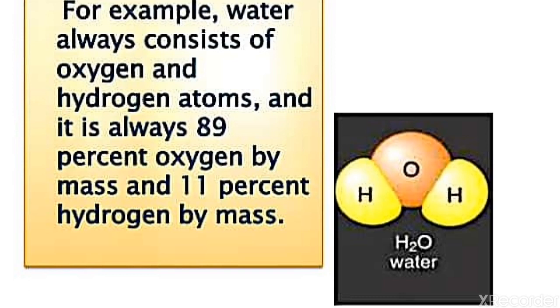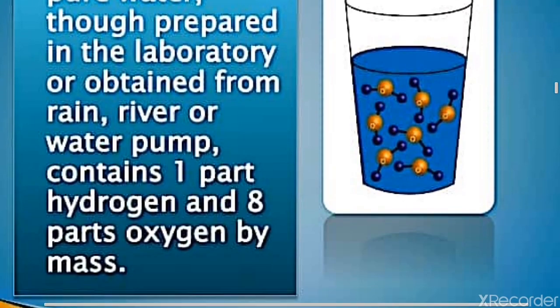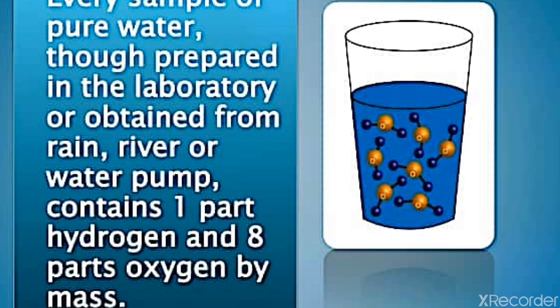For example, water consists of hydrogen and oxygen atoms — the formula is H₂O, meaning for two parts of hydrogen there is one part of oxygen. One hydrogen atom weighs 1 gram so 2 hydrogen weighs 2 grams, and one oxygen atom weighs 16 grams, giving a ratio of 2:16. So for 1 gram of H you require 8 grams of O. The percentage composition of H in H₂O is always 11% by mass and oxygen is 89%. Whether you take water from a laboratory, rain, river, or water pump, hydrogen is always 1 part to 8 parts of oxygen by mass.